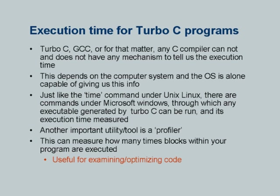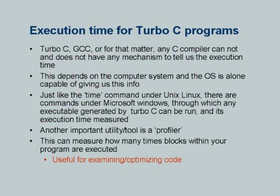This was related to the demonstration of execution time and the notion of algorithmic complexity. The question was: in Unix I can use the time command to find how long a program takes to execute. What do I do in the Turbo C environment? My first observation is that Turbo C, GCC, or any other C compiler does not have any mechanism to tell us about execution time, because execution time depends on the computer system and the operating system is alone capable of providing that information.